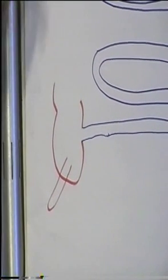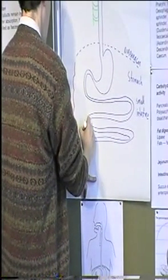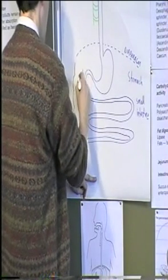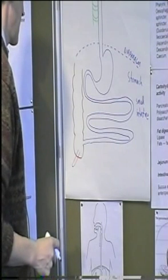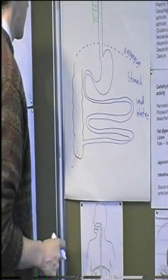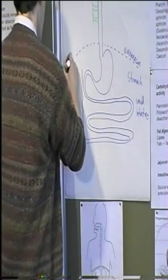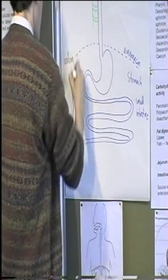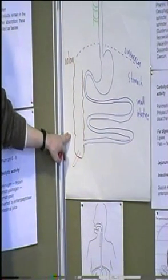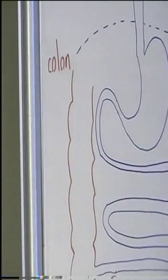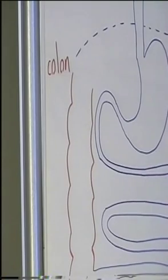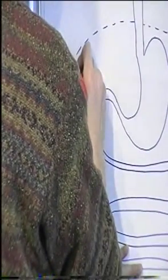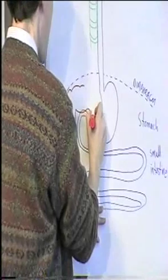The large bowel rises up through the abdominal cavity, up to near the liver up here — this is the large bowel, or the colon. And then it goes across the top of the abdominal cavity after a bend in it.